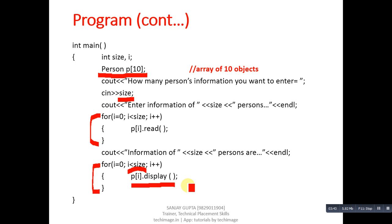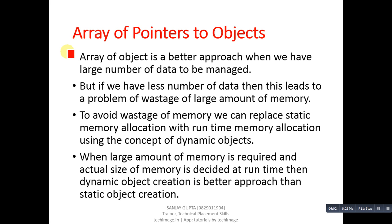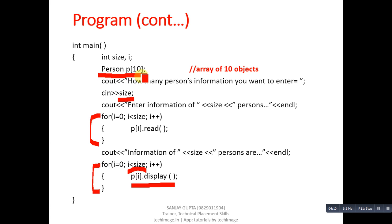If you want to store information of more than one entity into a single variable, you can convert that variable into an array — here the variable is treated as an object, so it is called an array of objects. Now, this array of objects can be converted into an array of pointers to objects. In the previous program, size is 10, but if the user wants to enter information of only 5 persons, 5 blocks remain unused.